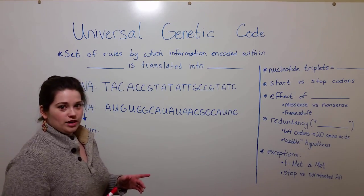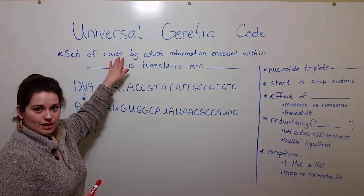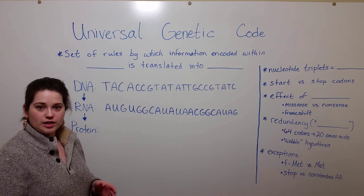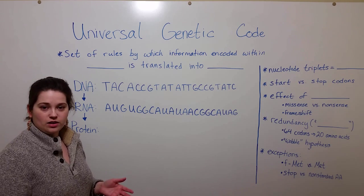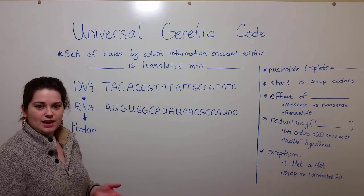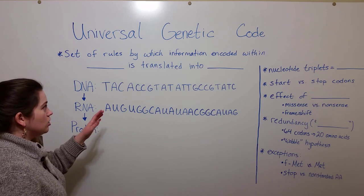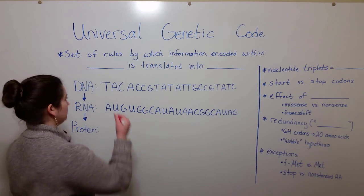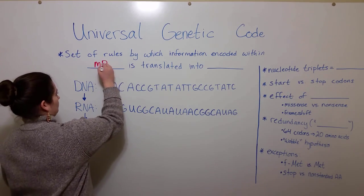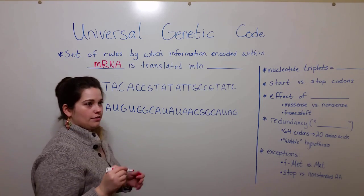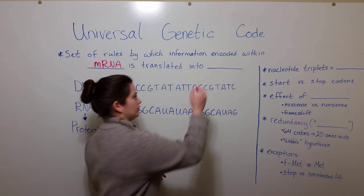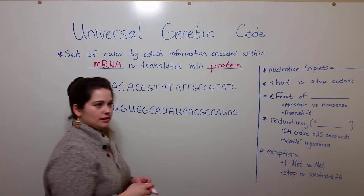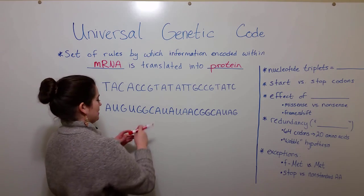First, let's talk about what the genetic code is. It's simply a set of rules, a set of instructions, that the cell uses to get information encoded in genetic material into protein. It's kind of like a language. The genetic code helps information encoded within mRNA to be converted into protein through the process of translation.